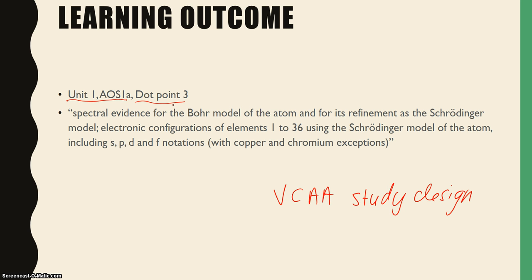By the end of this lesson you should be able to complete the first part of this dot point. We're looking at the spectral evidence for the Bohr model of the atom and that's what we're concerned with today. The rest of the dot point we're doing in pre-lesson 2.